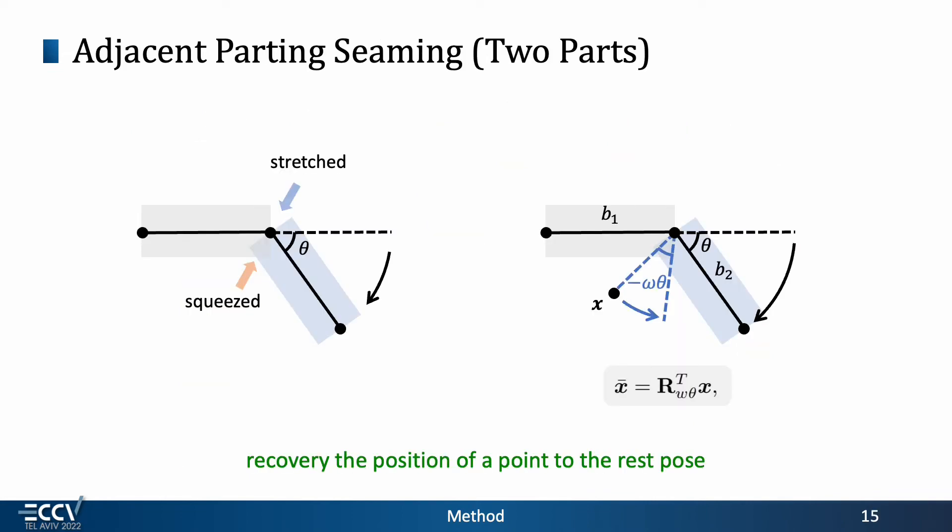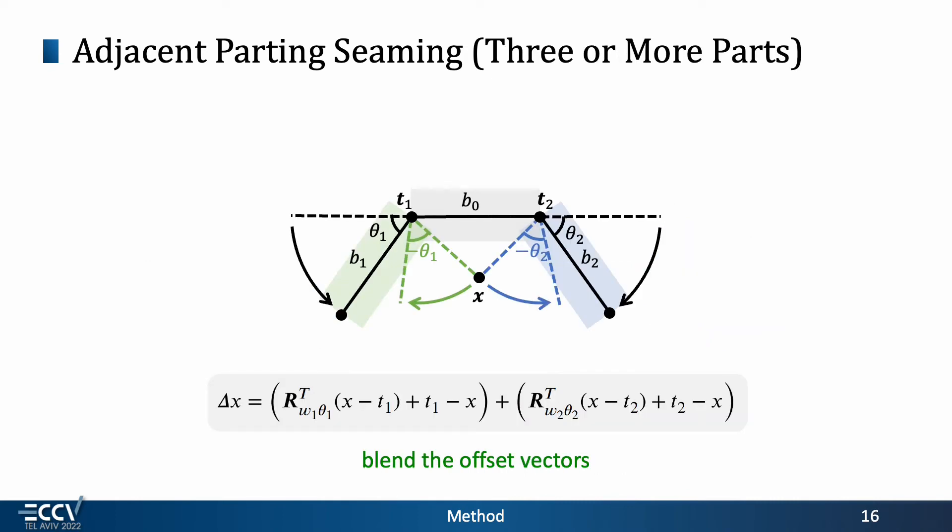Therefore, we propose adjacent part skinning to explicitly model the interaction between parts. The goal is to recover the position of a point when its adjacent parts are in the rest poses. We accumulate the offset vectors for three or more connected parts.